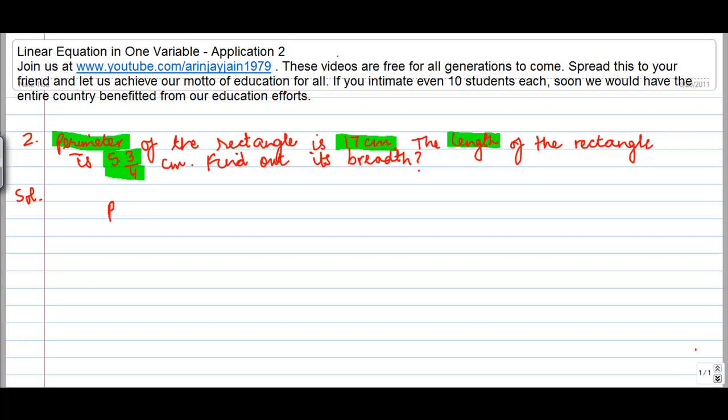Now, we all know that perimeter of a rectangle is equal to two times the sum of length and breadth. We are told that the perimeter of this rectangle is 17 centimeter is equal to two times the length plus the breadth.